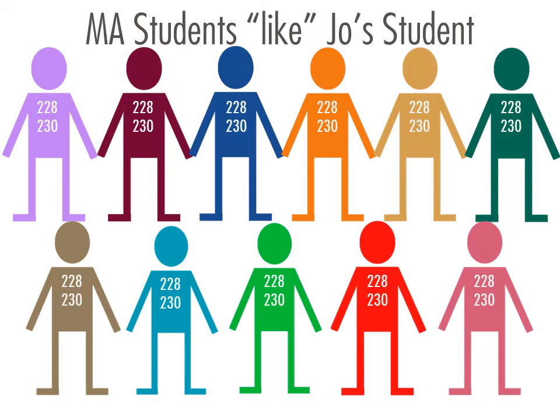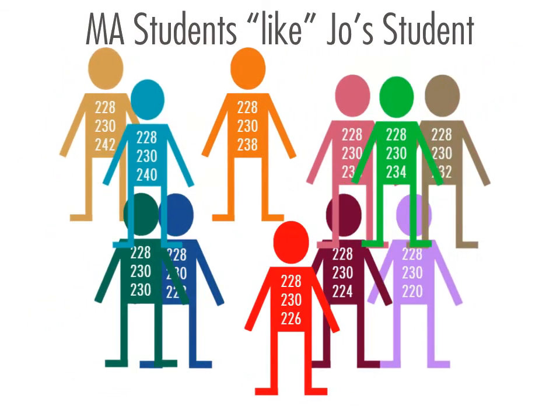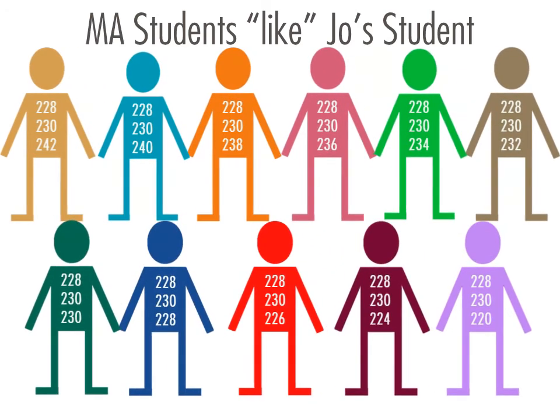Each student takes the math MCAS test this year in grade 7 and receives a score. In this example, each score is different — some go up, some go down, and some stay the same. The students are rank ordered by the amount of improvement in their grade 7 scores compared to the previous two years.